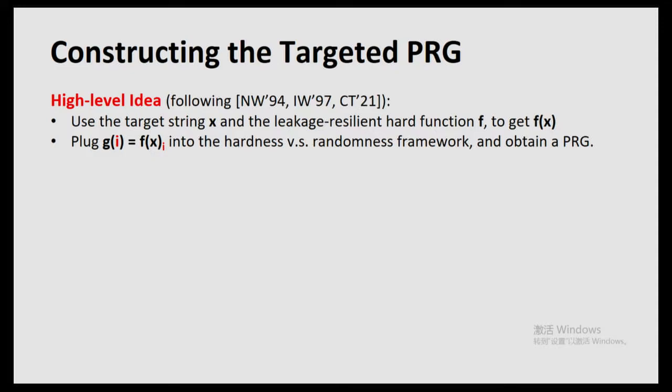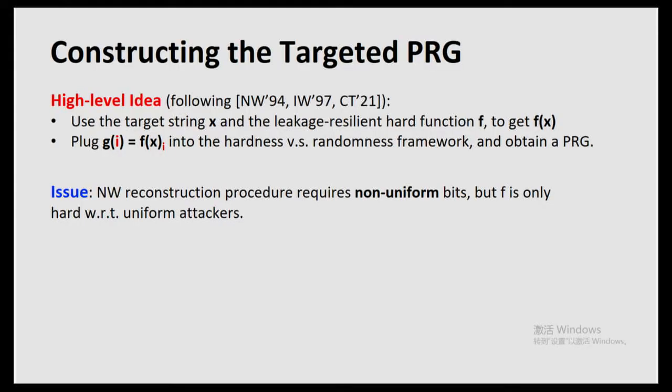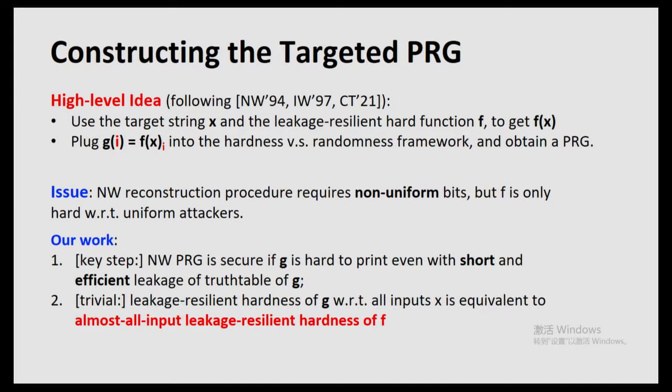We first use the target string x and a leakage-resilient hard function F to compute F(F(x)) — roughly the same as what we did yesterday. Given F(F(x)), we interpret it as a truth table of some hard function and plug it into the Nisan-Wigderson hardness-versus-randomness framework to obtain a PRG. The issue with the Nisan-Wigderson framework is always that the reconstruction procedure requires non-uniform bits — oracle access to the encoded version of F(F(x)). But our assumption is that F is only hard with respect to uniform attackers. This is the place where leakage-resilient hardness comes to help.